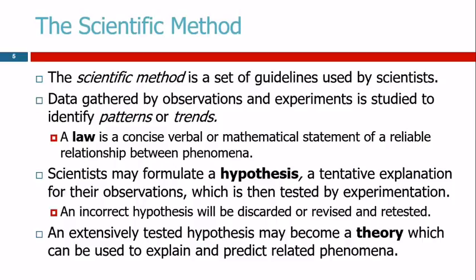Sometimes the observation of a pattern or trend is a law. A scientific law is just a concise description of a reliable relationship between phenomena — what that means is we observe that if we do one thing, something else always happens. Have you heard of the law of gravity? The law of gravity says that if I let go of this marker, it's going to fall to the floor. It does that every semester. That's the law of gravity — it says what is going to happen, a relationship between phenomena. Laws just say what happens: if I do this, this will happen.